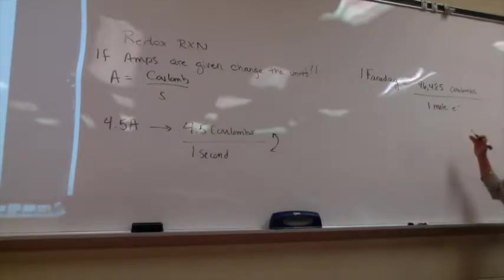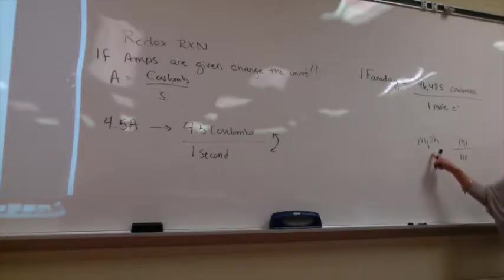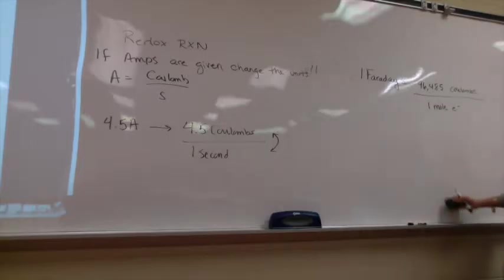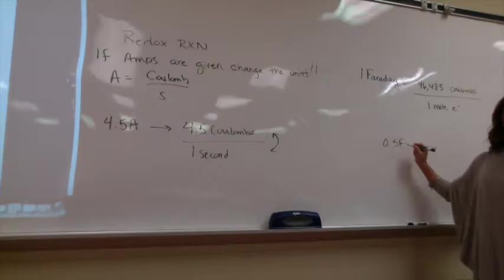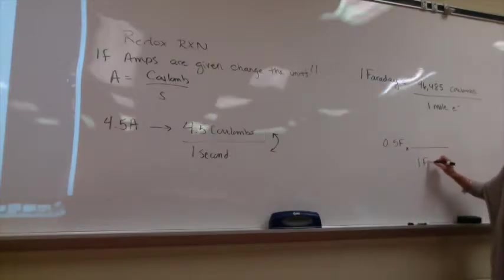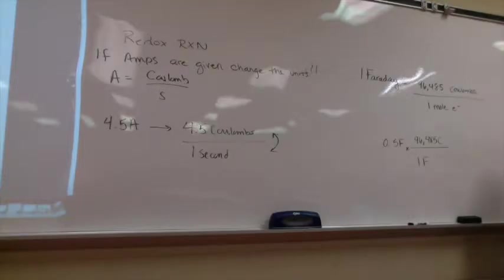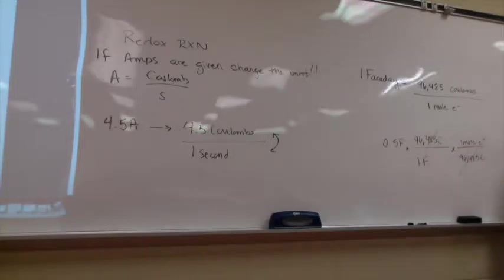If you don't write things out as a numerator and denominator, you're not going to see it as a conversion factor. It's like writing MPH — miles per hour is a conversion factor, but MPH by itself, you don't see that. So when you see a Faraday, write coulombs per mole of electrons. When you see an amp, write coulombs per second. They can give you a fraction of a Faraday — say 0.5 Faradays — and you do a dimensional analysis problem where one Faraday equals 96,485 coulombs to find how many coulombs you're starting with.